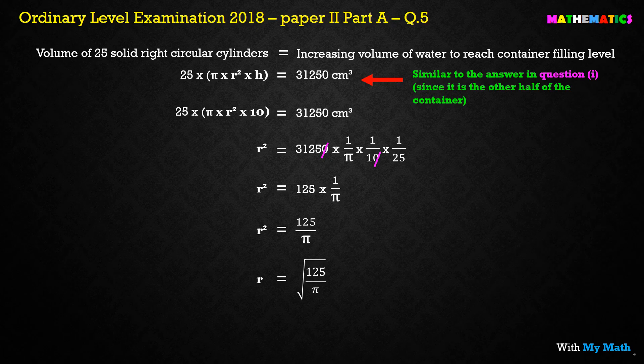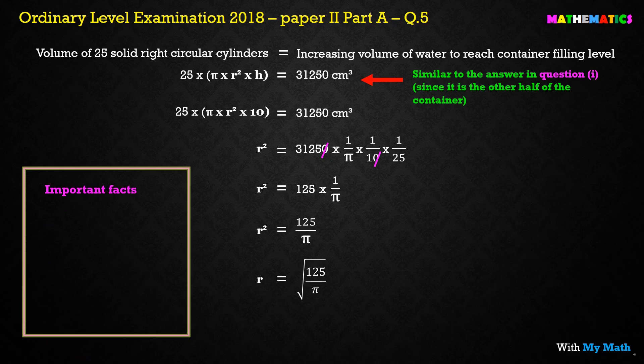I have considered only the positive answer here. Although a square root gives two answers — plus or minus — since r is a radius, we only take the positive value. I also show some important facts regarding indices.